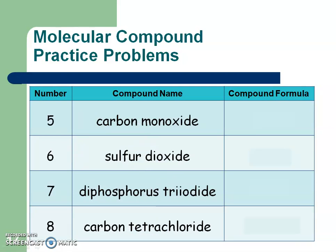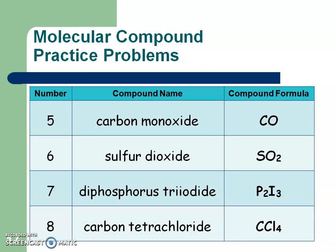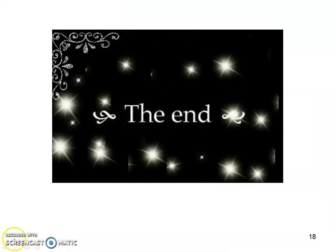For problems five through eight: number five is CO — mono is used on the second part but not the first. Number six, sulfur dioxide, is SO2. Number seven has two prefixes so two subscripts: two phosphorus and three iodine, giving P2I3. Number eight is CCl4. Hopefully that makes sense — we'll see you in class for questions.